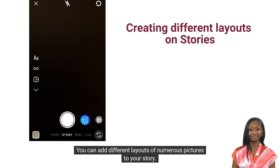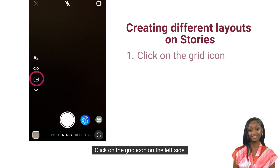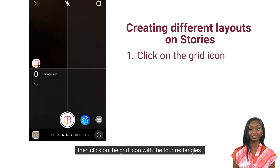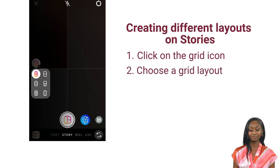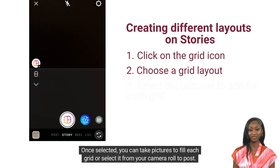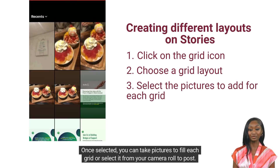You can add different layouts of numerous pictures to your story. This would consist of a series of photos combined in a collage, where you can change the grids of the layout. Click on the grid icon on the left side, then click on the grid icon with the four rectangles. Here, you can choose a grid layout. Once selected, you can take pictures to fill each grid or select from your camera roll to post.